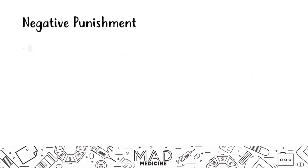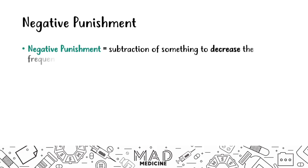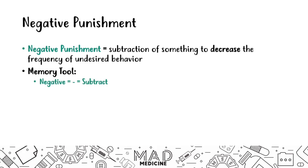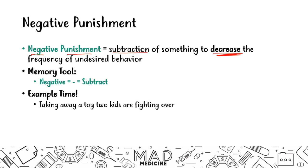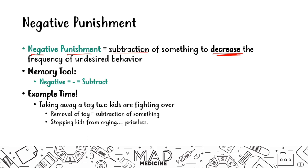As for negative punishment, that is subtracting something to decrease the frequency of the undesired behavior. Remember, negative means subtraction and punishment means to decrease the frequency of the undesired behavior. The example here is that a parent might take away a toy from two kids who are fighting over it. The removal of the toy subtracts something from the equation, which would cause the kids to stop crying — decreasing the frequency of the undesired behavior.